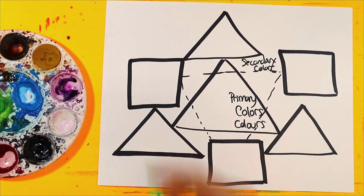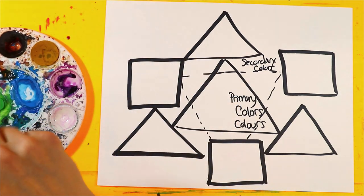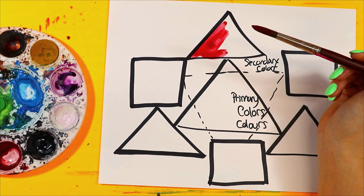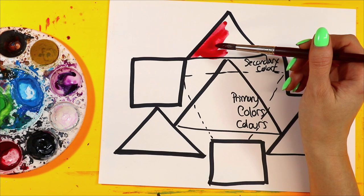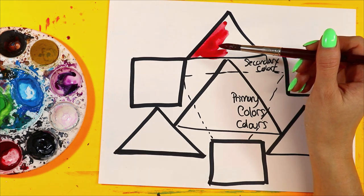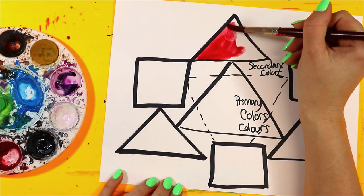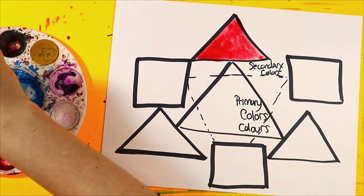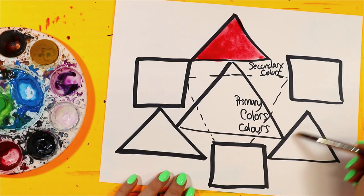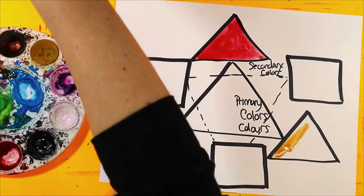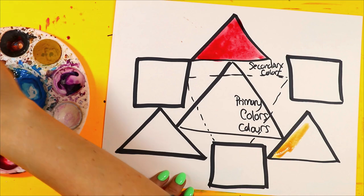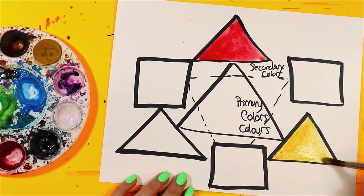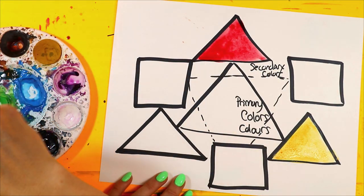Let's do our primaries nice and easy. We don't have to mix. We're going to get our red. I'll paint the top one with our red. Okay and then the next one will be my next triangle, not my squares. We're doing our triangles. Yellow.